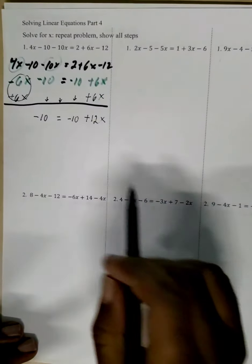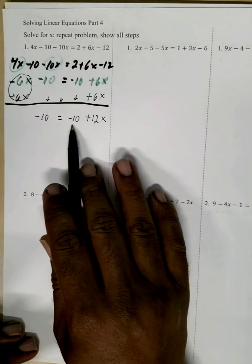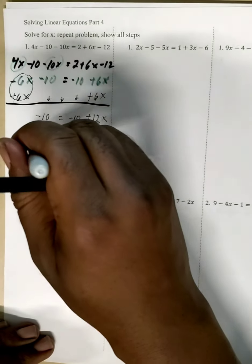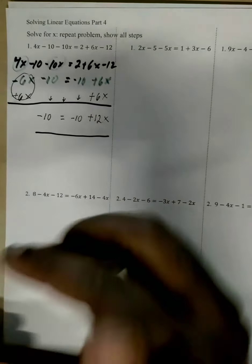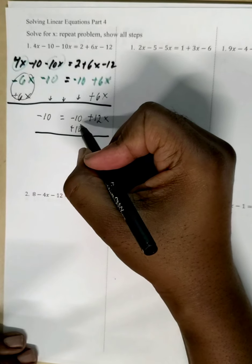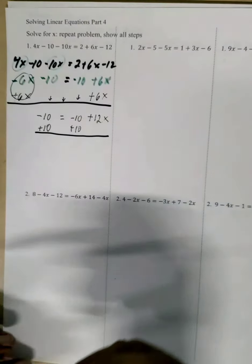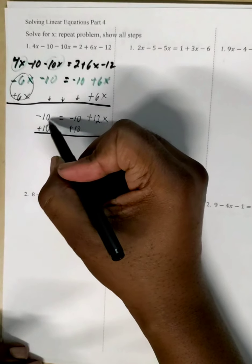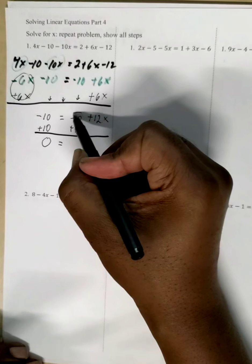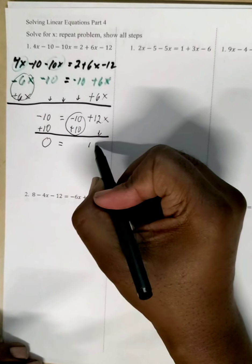Now this is a right side problem because x is on the right side. We need to get rid of the subtracting 10 and the multiplying 12. First, getting rid of the subtracting 10, we're going to use adding 10, and that'll make that zero. What we do on one side we do on the other, so there's another adding 10 there. These two make zero and 12x comes down.